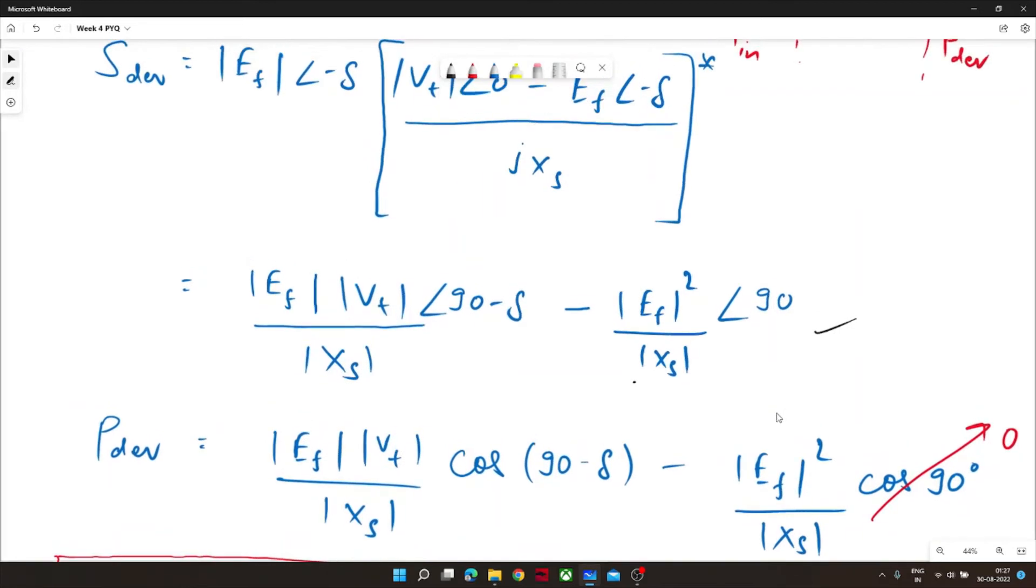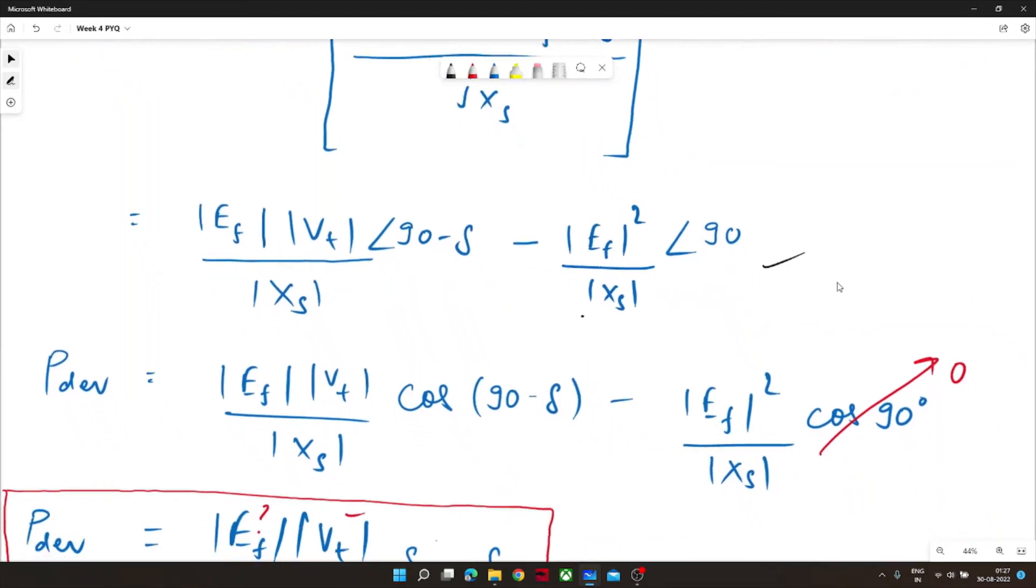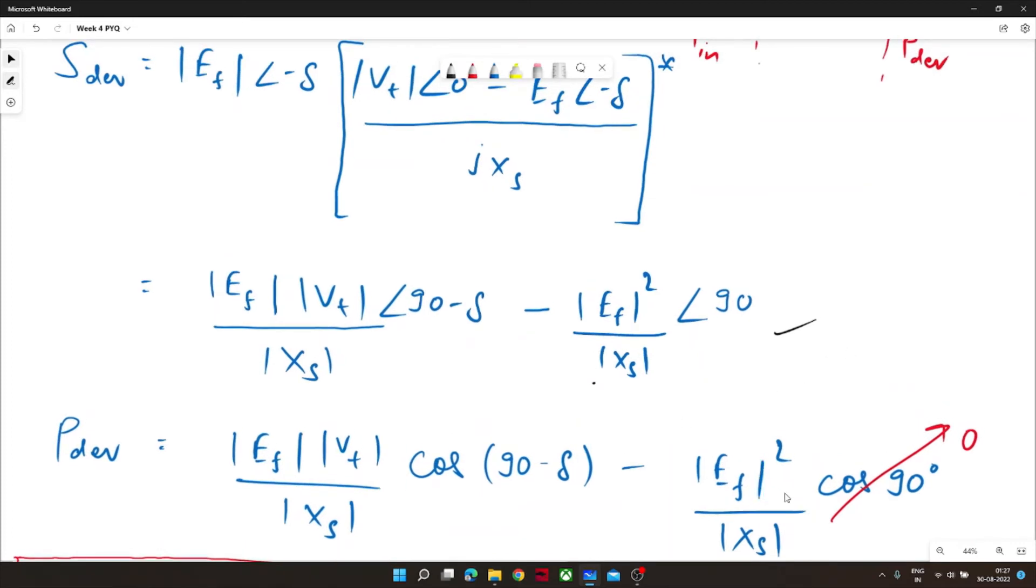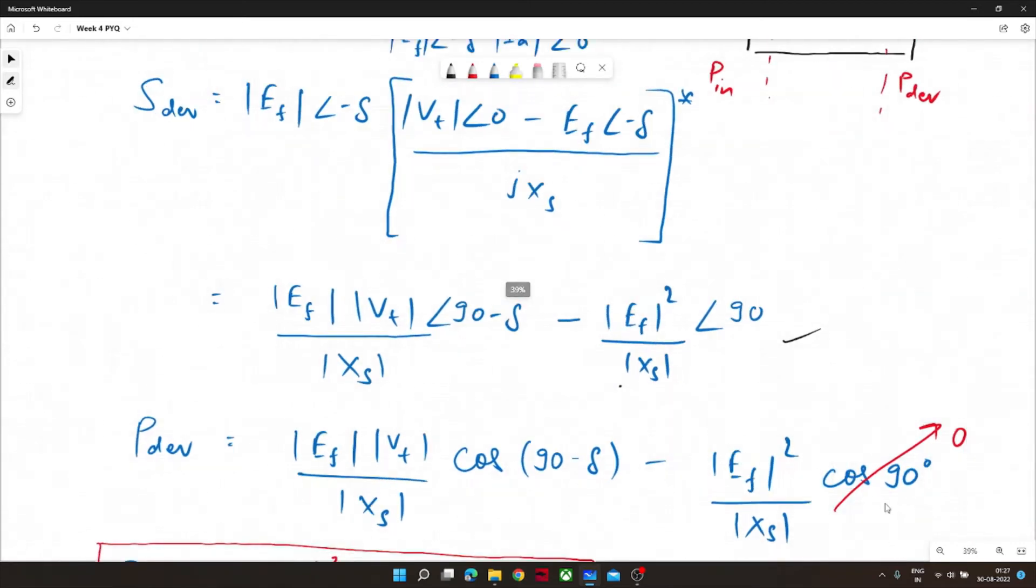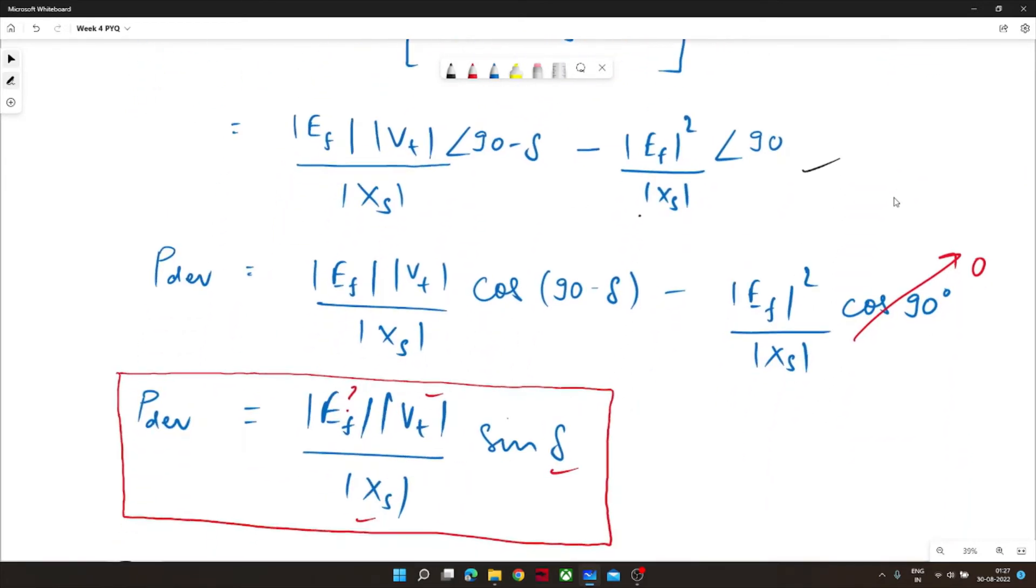So here I needed power developed since power developed is asked in the problem. E_f V_t by X_s cos 90 minus delta we will put cos in this angle. After getting this equation we know cos 90 is equal to zero so this will be eliminated and the standard formula of power developed we can achieve from here.